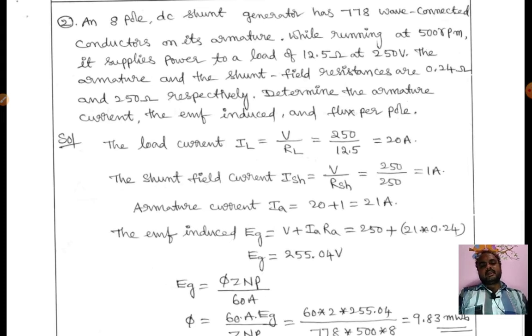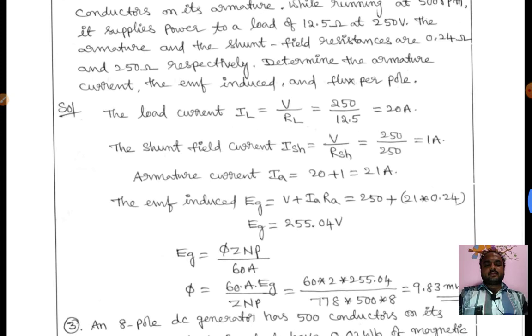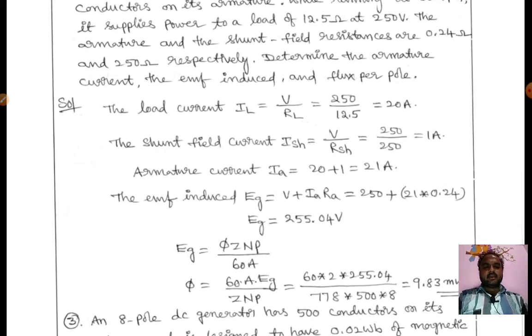You have to find out Eg and φ values. First, Eg: the formula is Eg = V + IaRa. Terminal voltage is given, Ia you have to find out, Ra is given. Ia = IL + Ish. IL = V/RL = 20 amperes. Ish = V/Rsh = 1 ampere. Substituting IL and Ish values: Ia = 20 + 1 = 21 amperes. The induced EMF Eg = V + IaRa = 255.04 volts.